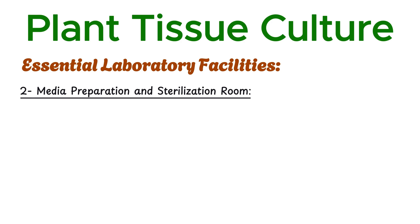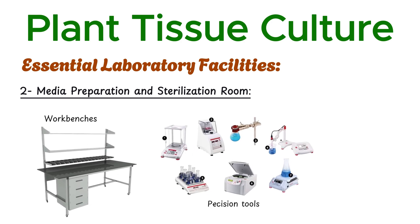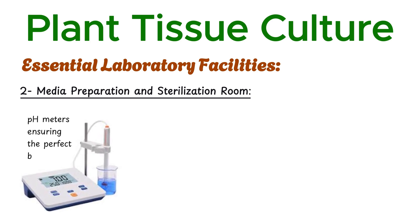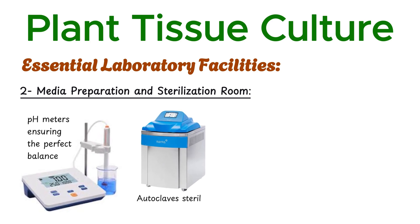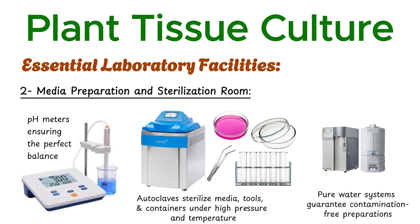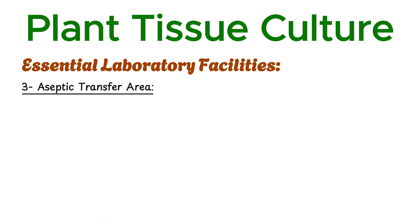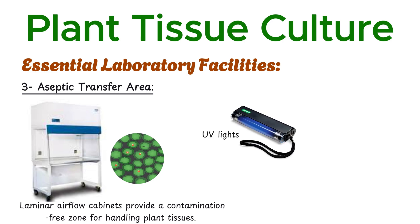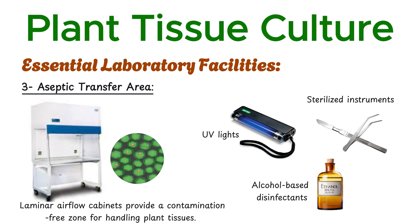Here's where the magic begins. Workbenches and precision tools are used to prepare nutrient-rich growth media, with pH meters ensuring the perfect balance. Autoclaves sterilize media, tools, and containers under high pressure and temperature, while pure water systems guarantee contamination-free preparations. Sterility is everything: laminar airflow cabinets provide a contamination-free zone for handling plant tissues. UV lights, alcohol-based disinfectants, and sterilized instruments like scalpels and forceps ensure the process remains impeccably clean.